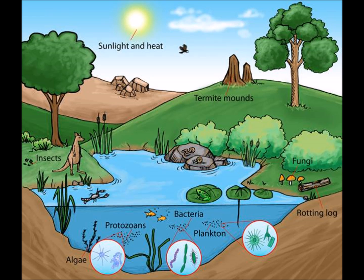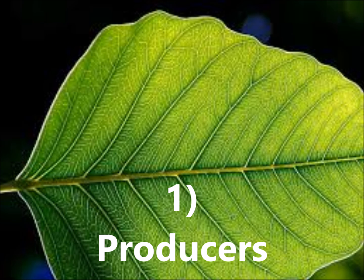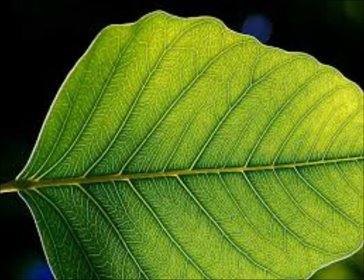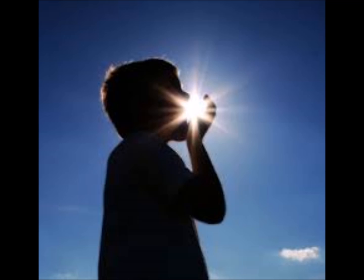An ecosystem has three major jobs. Number one: Producers. Producers are living things that make or produce their own food. That's right — they take the sun and a few nutrients and make food. Sunshine has a meal. Wow!